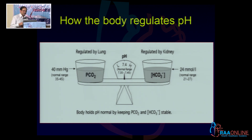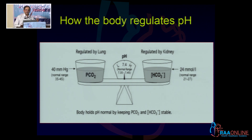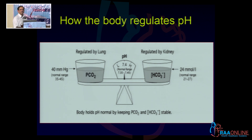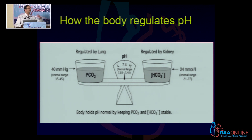If CO2 goes up, the pH will obviously slide towards an acidotic range. What the body does is try to neutralize the effect of this disturbance by making a change on the other side — and simply speaking, that is what compensation is. If there is a primary change in one of these, the other side will move to minimize the effect on the pH.